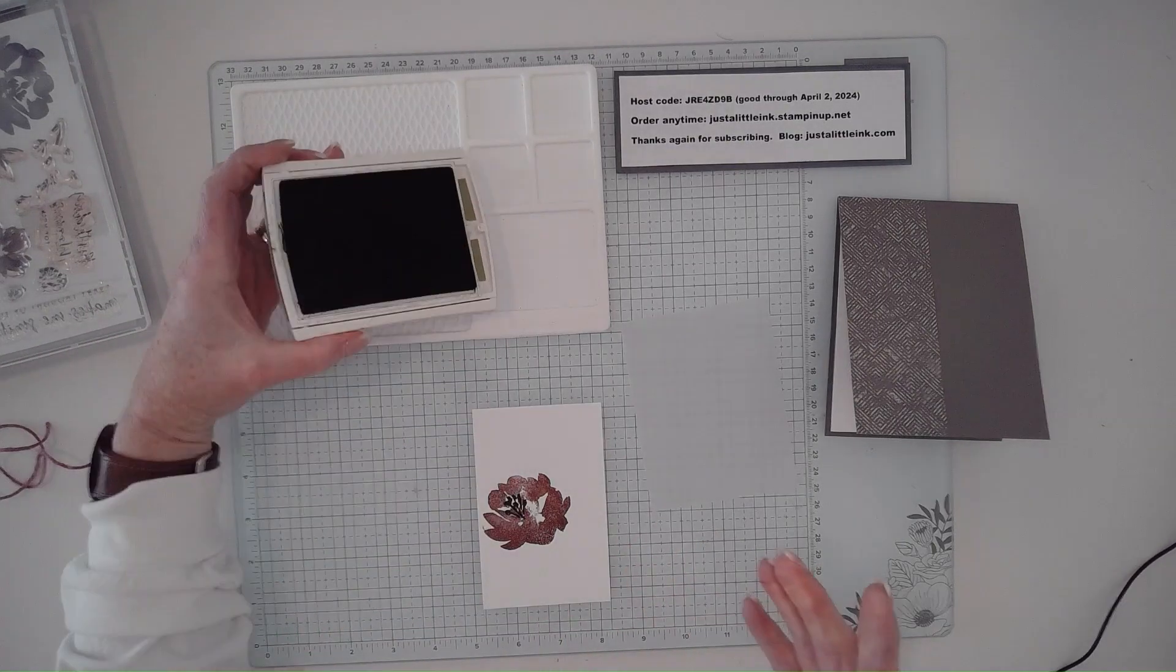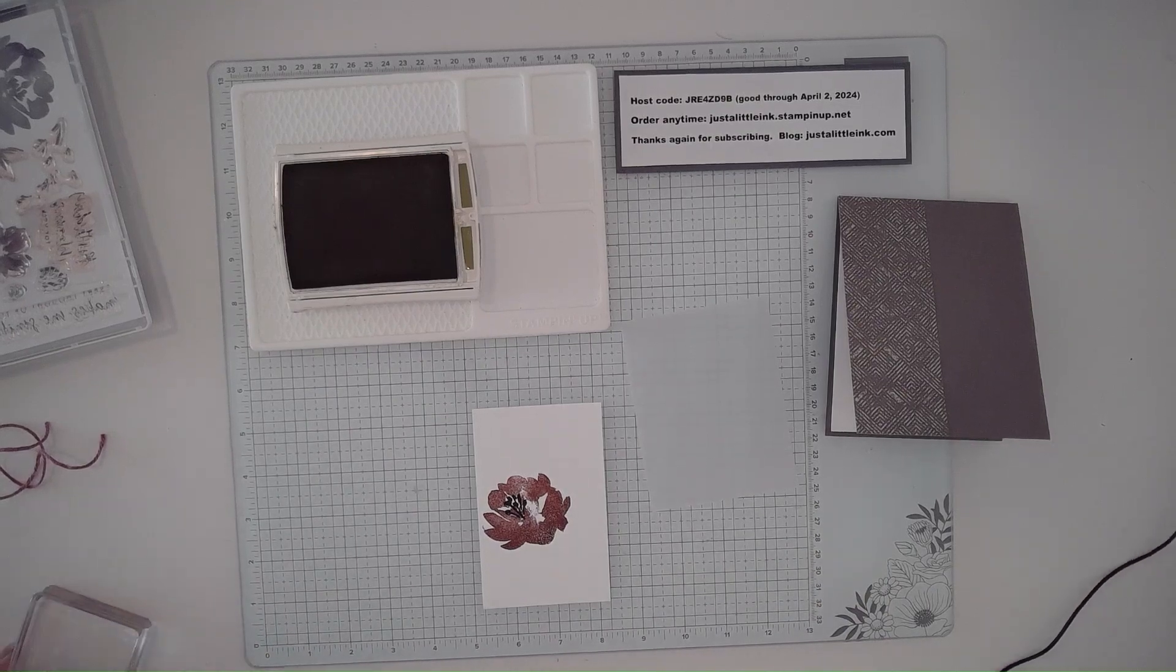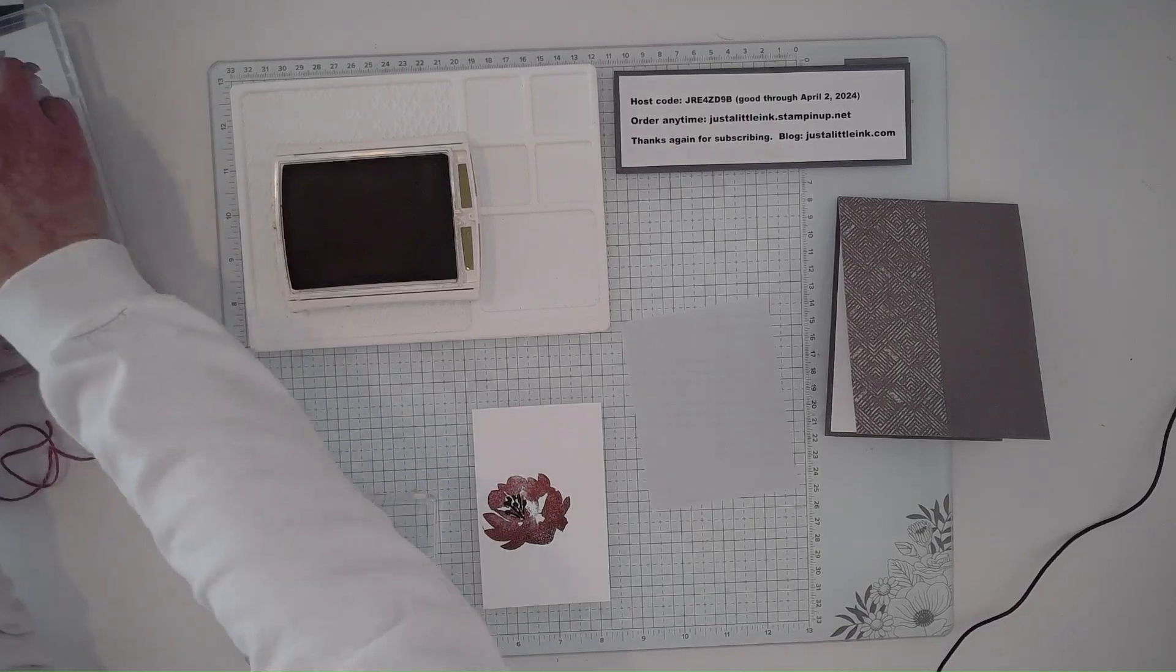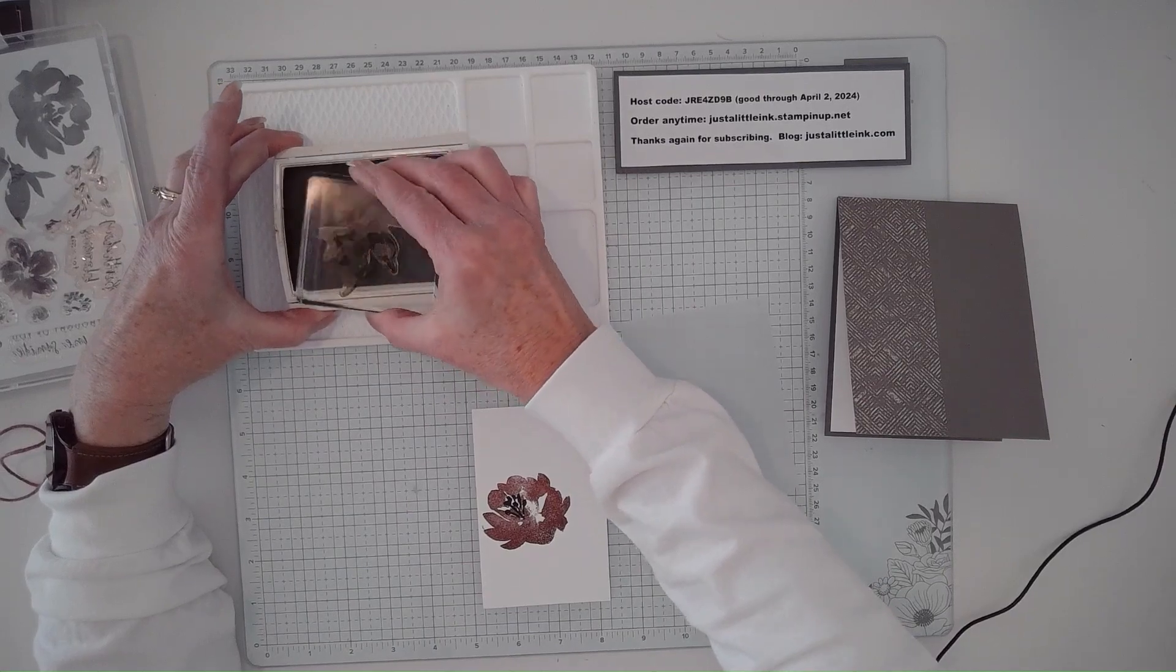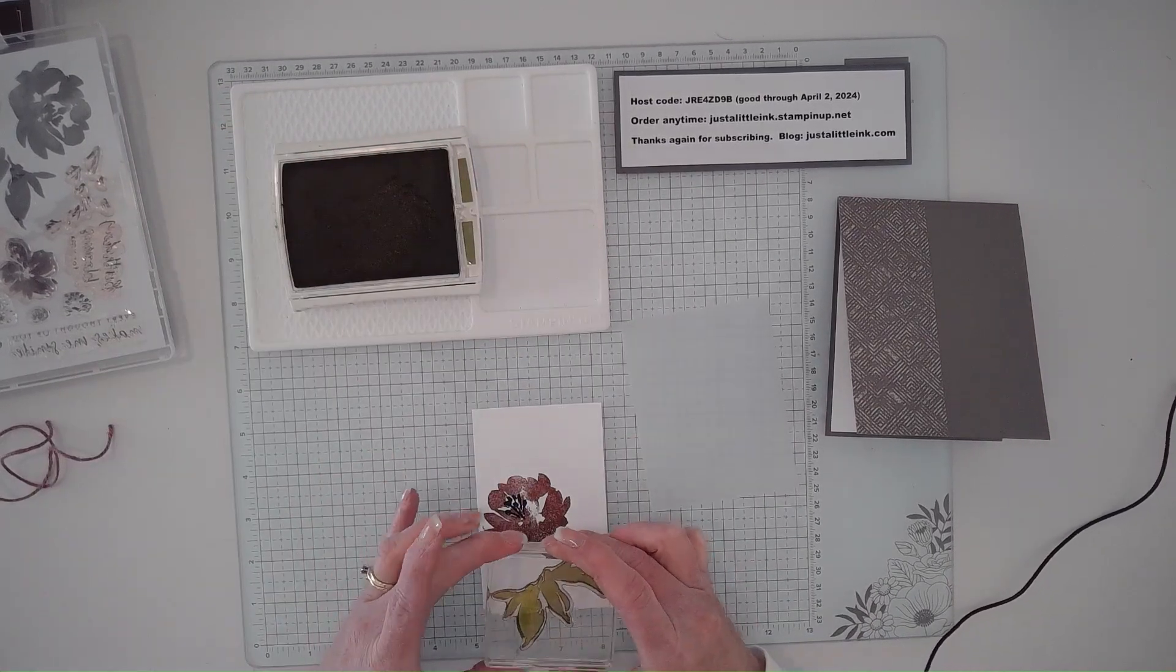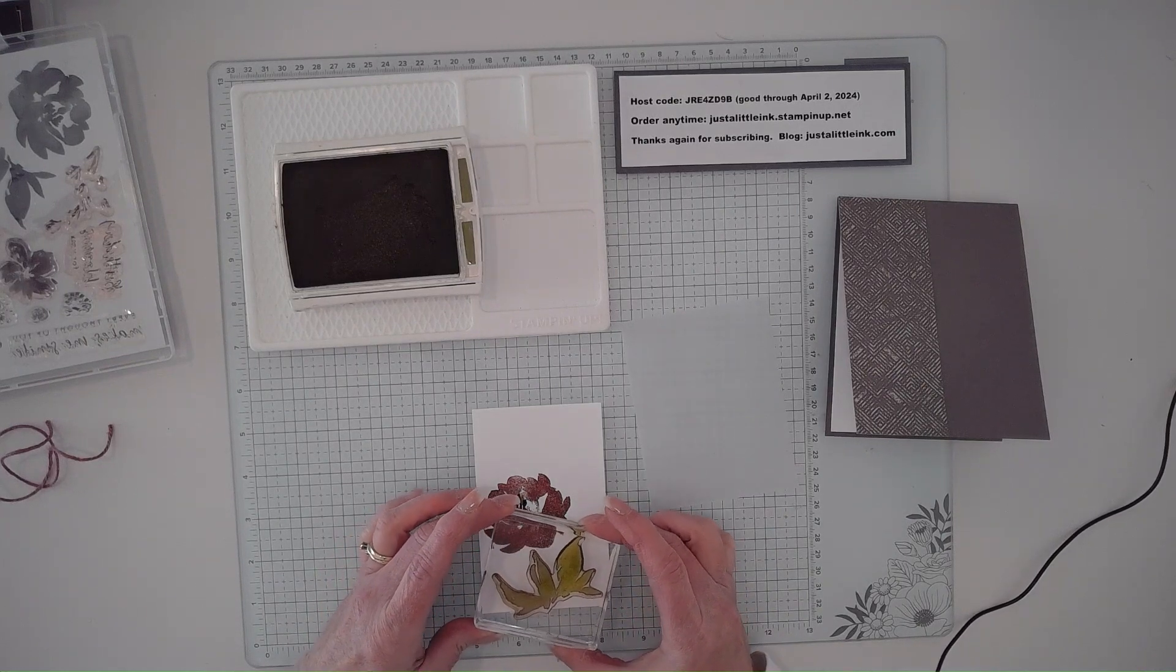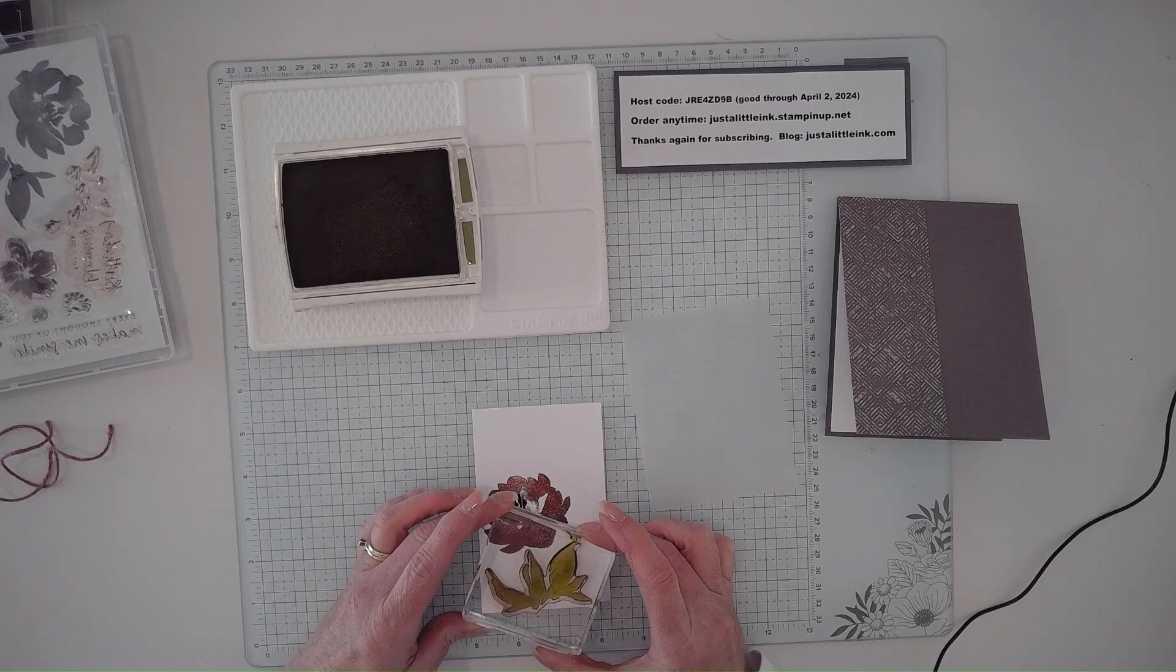I'm going to pull out my Old Olive and grab the leaves for this. I have found that I do the best with this particular stamp set if I don't try to do them connected on the stamp, in other words, to cut them out with the dies, which is what I did with mine.